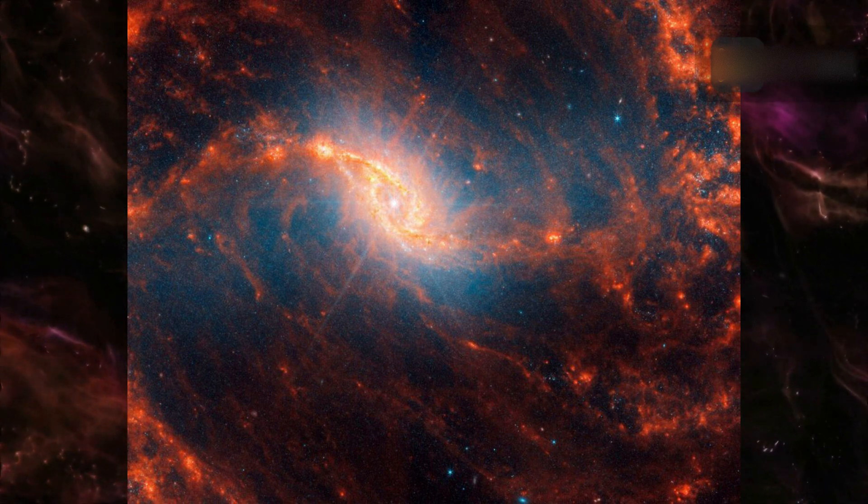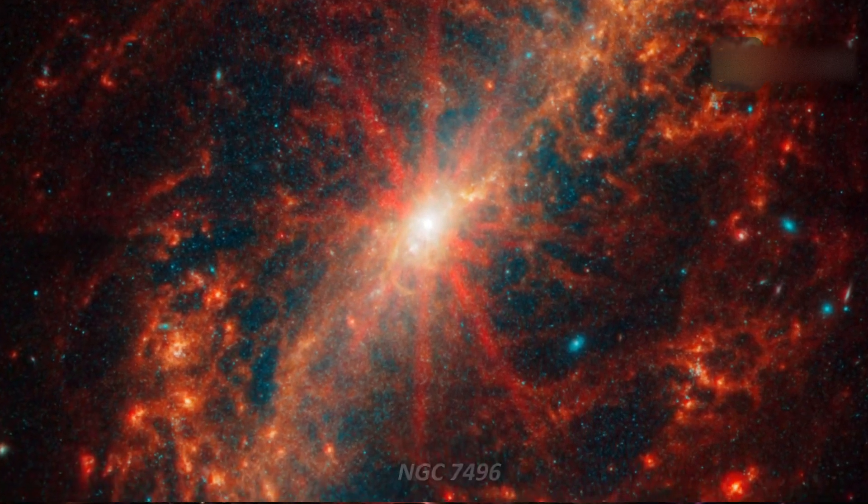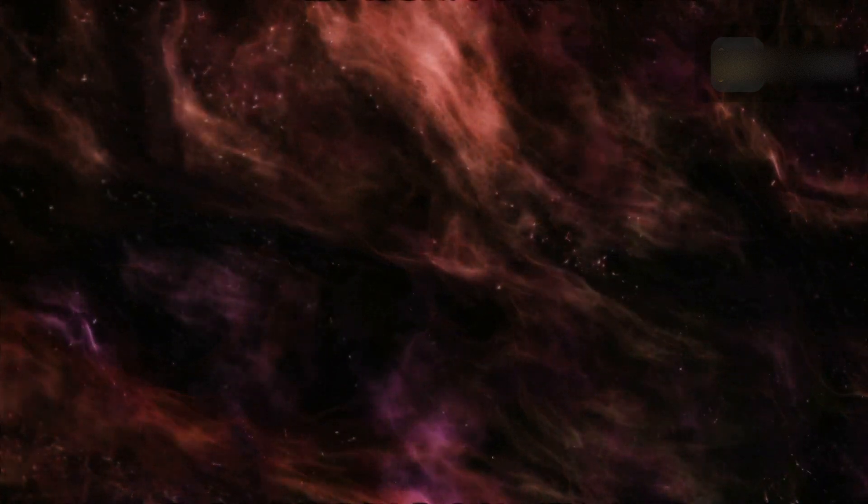These hot blue stars can be seen clearly in the Webb PHANGS image of the spiral galaxy NGC 7496, which is 24 million light-years away from Earth in the constellation Grus.